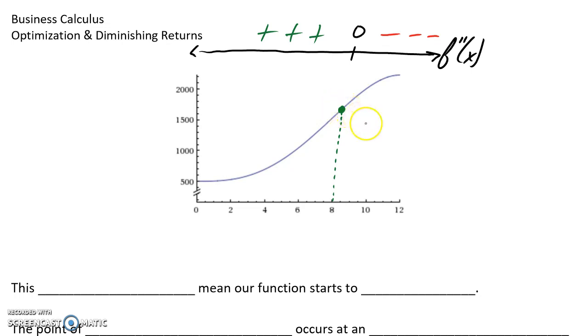So when we find this point of diminishing returns, really what we're doing is finding an inflection point, so a point where our second derivative changes from positive to negative. And now we're applying some context or some application to it.